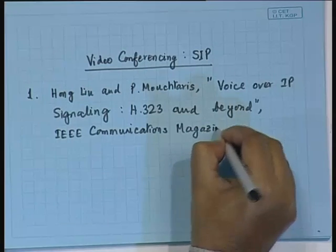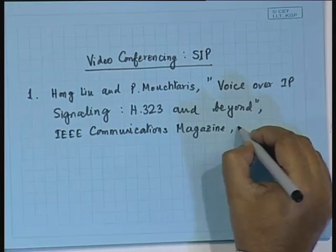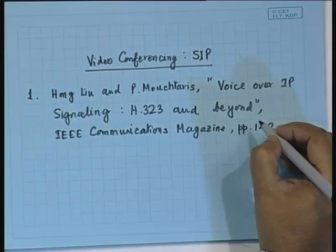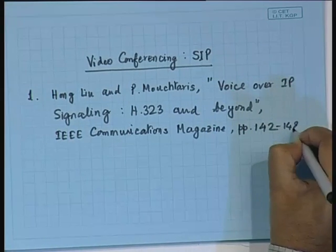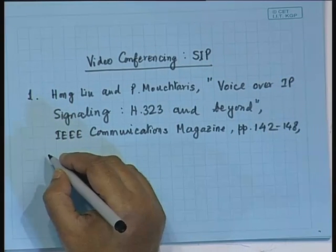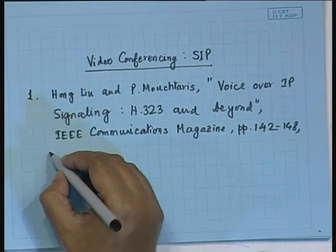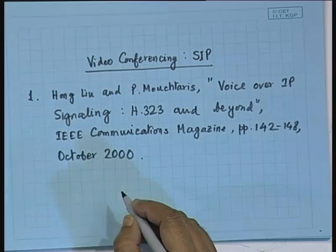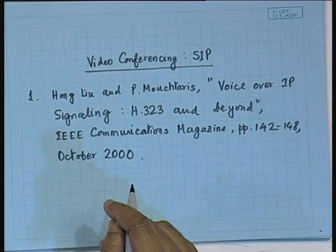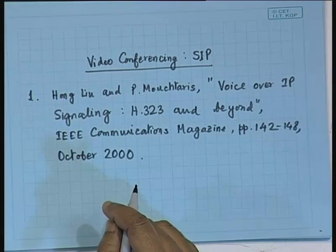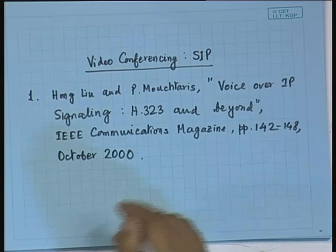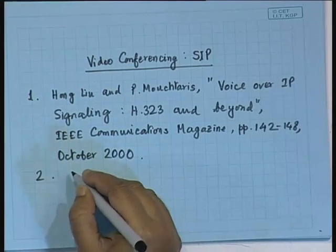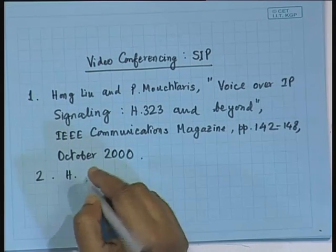This is a magazine paper, not a transactions paper, so it should be easy to understand. The page numbers are 142 to 148 and it appeared in IEEE Communications Magazine in October 2000, which is a special issue on advanced signaling and control in next generation networks. In the same issue you should also refer to a paper by H. Schulzrinne.